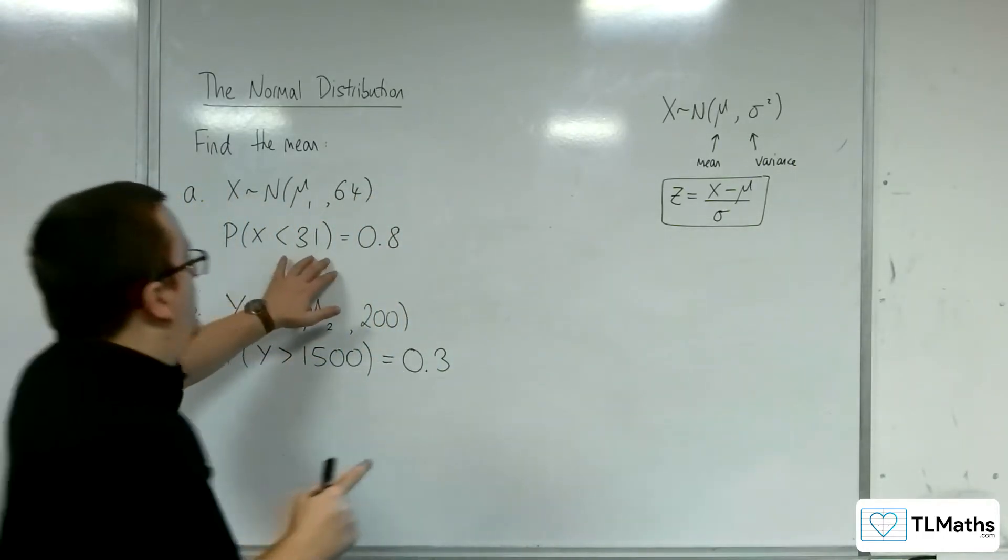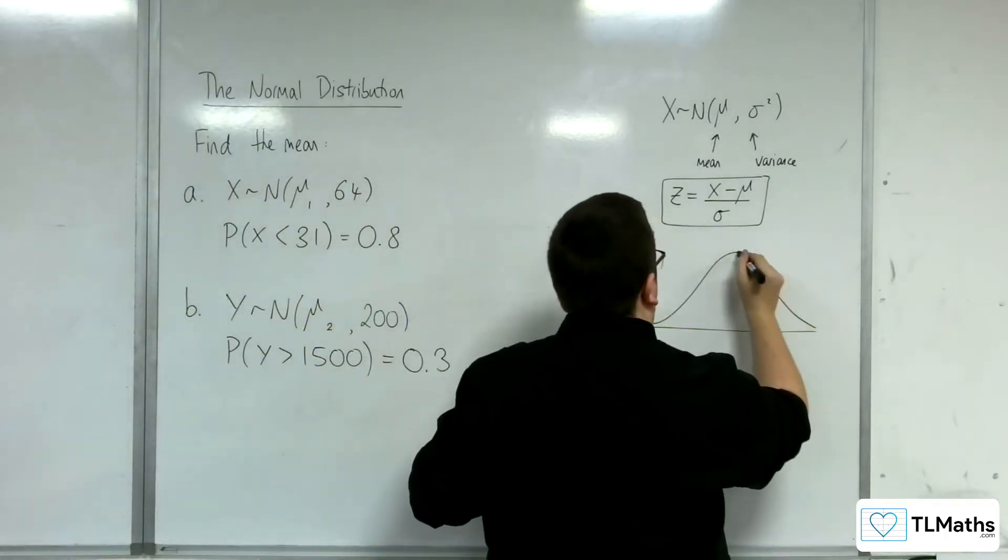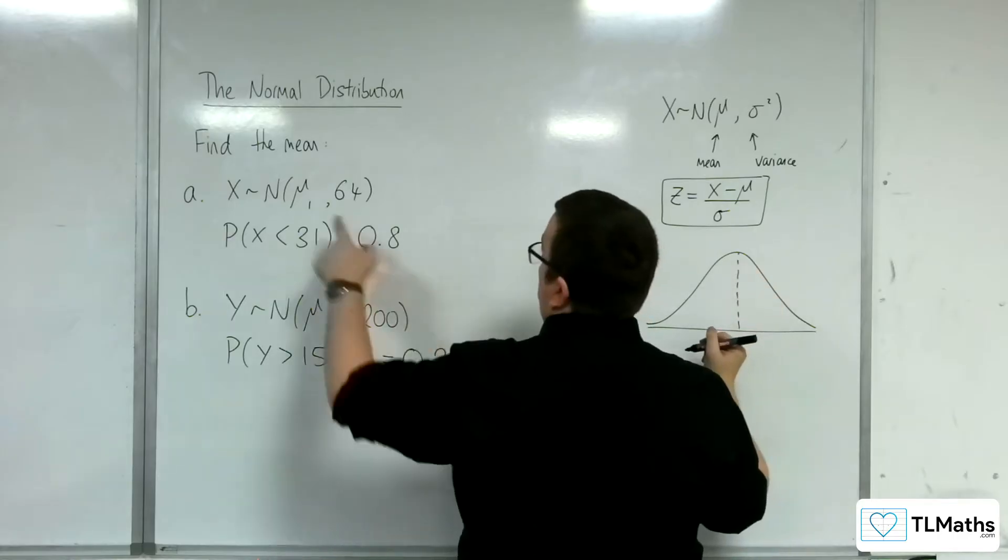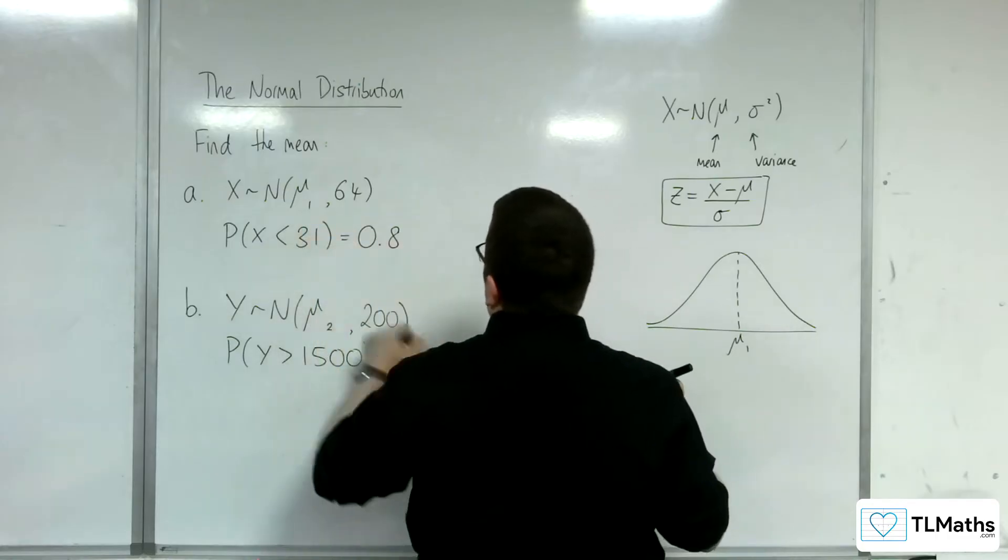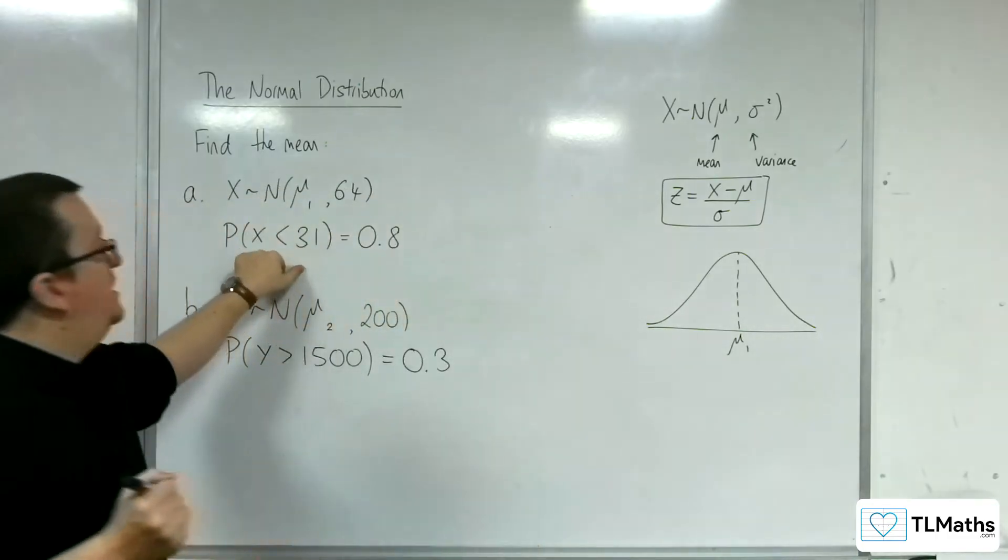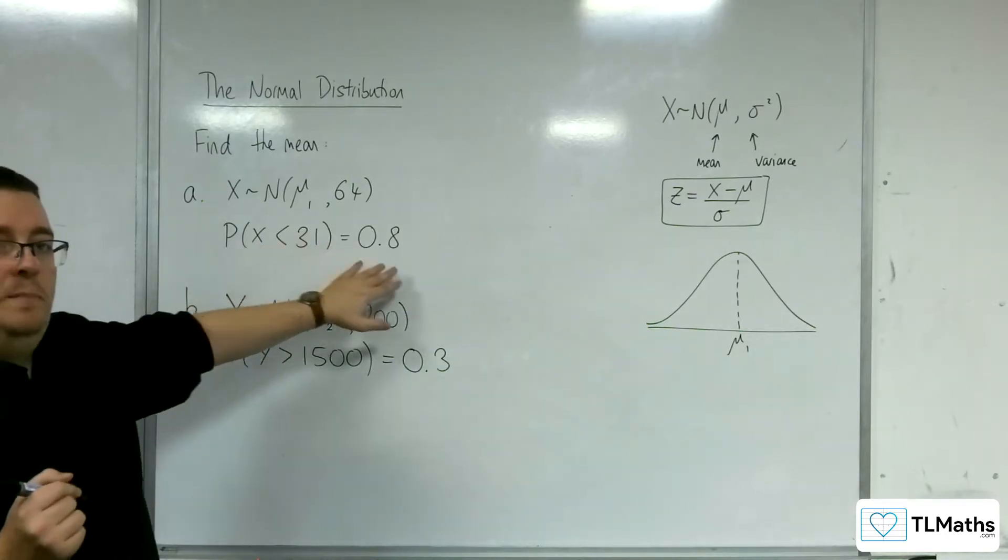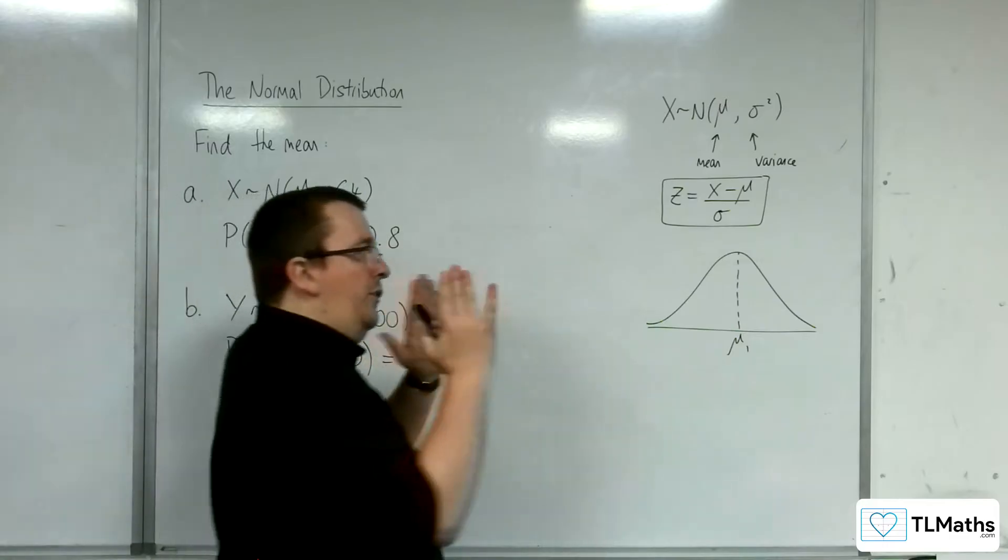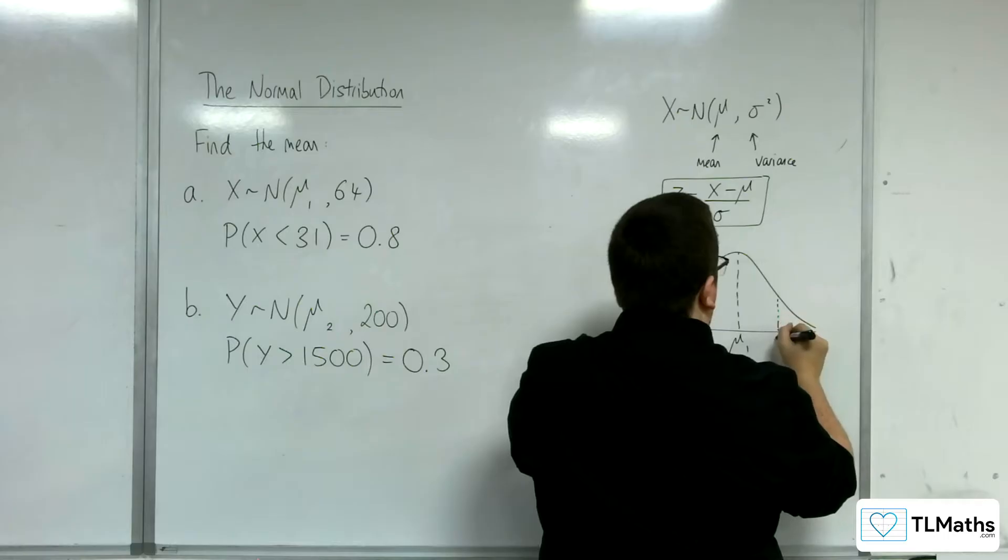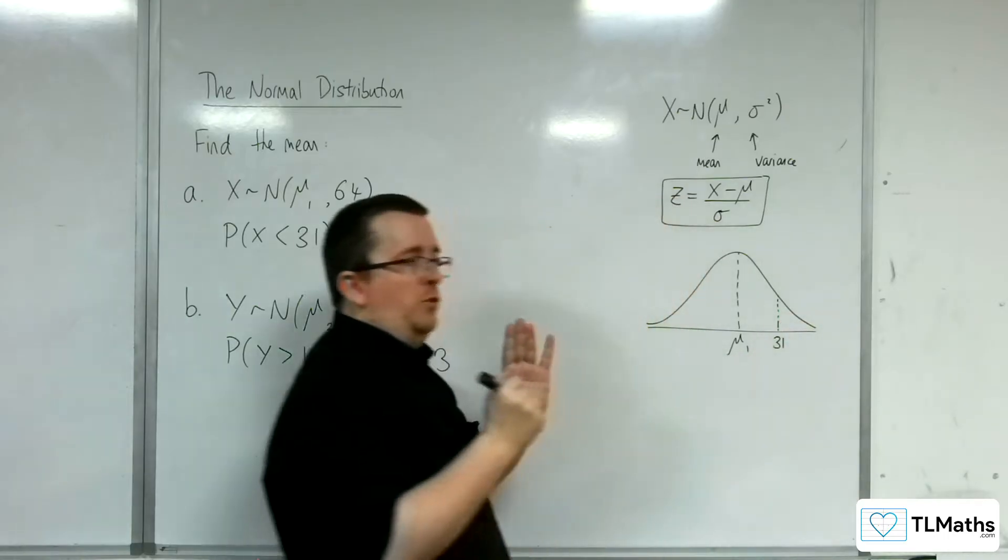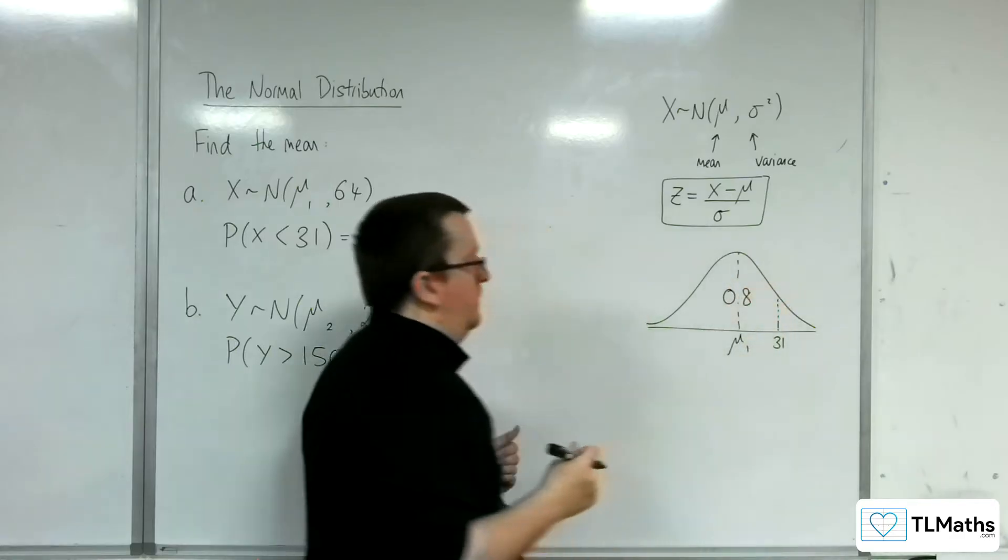So let's draw a diagram. So here's my distribution. The mean is at μ₁, so I don't know where that is. But I know that the probability of x being less than 31 is 0.8. So to the left of 31 must be 0.8. 0.8 is larger than half, so actually 31 should be somewhere over towards the right in order for this to be 0.8.